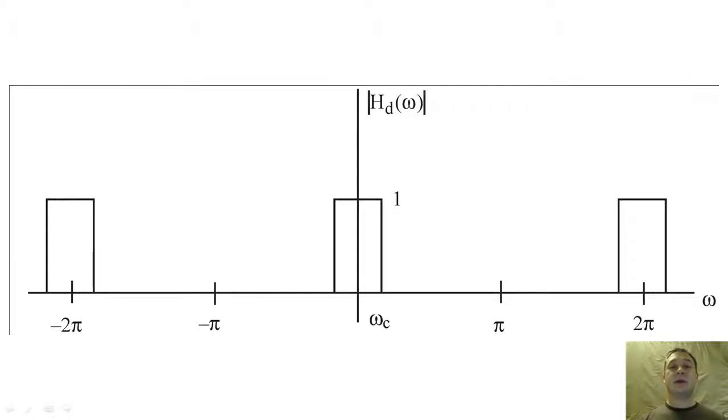The first type of filter is the low-pass filter. This filter passes all frequency content below a critical frequency, omega-Z, and removes all frequency content above the critical frequency.